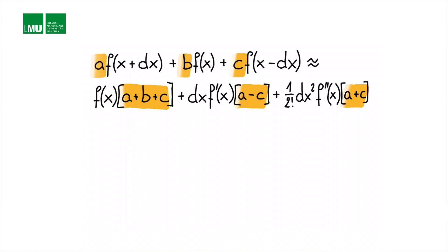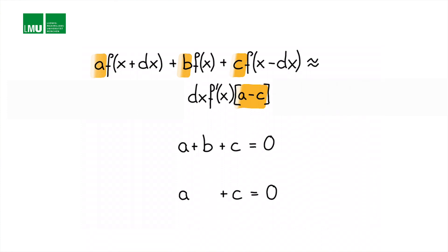So what are those coefficients a, b, c? If we look at the right hand side of the equation we can see that if we say a plus b plus c equals 0 then the first term would vanish. If a plus c equals 0 the third term would vanish and we are left with something that contains the first derivative plus some terms with a and c.